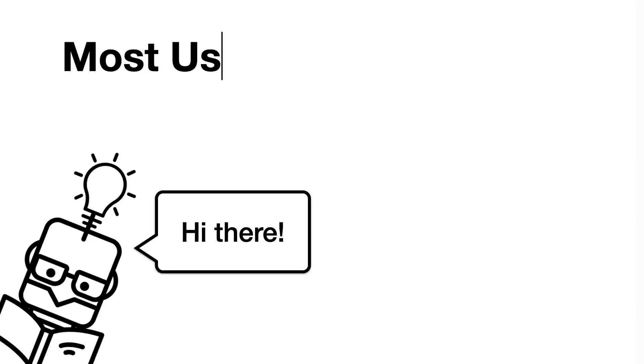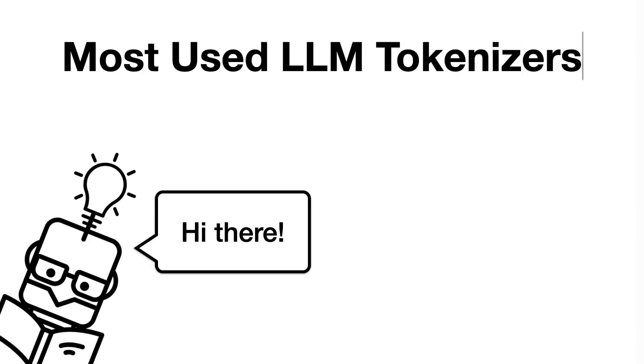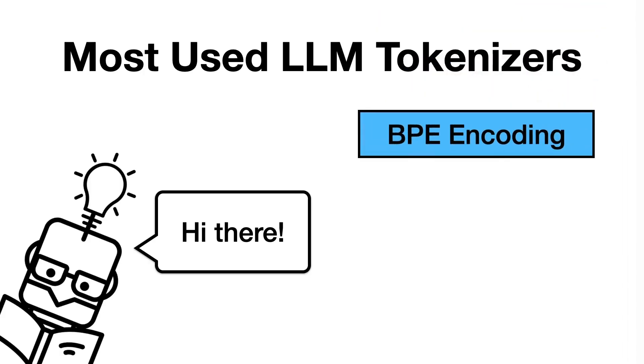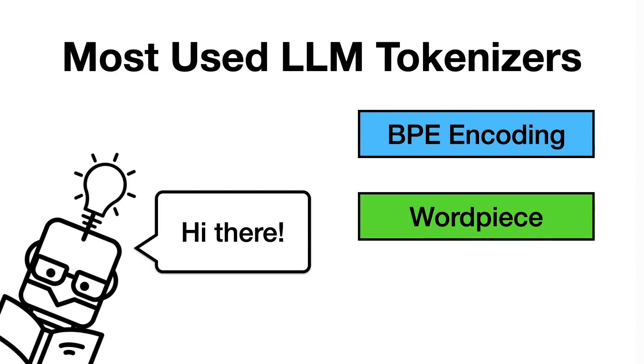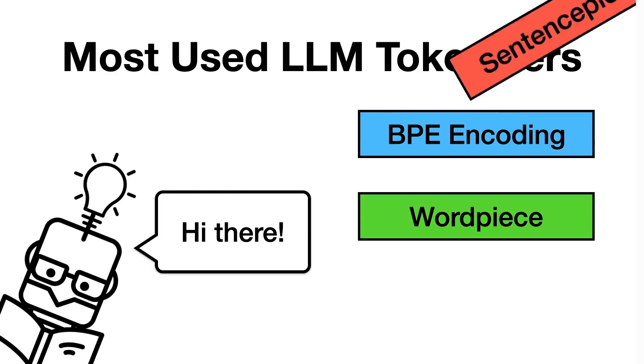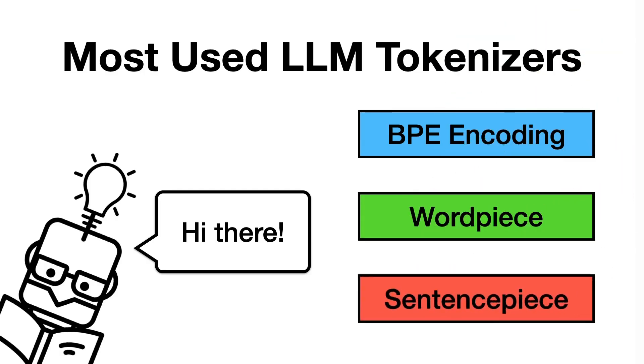Hi everyone! In this video, we are going to talk about 3 tokenizers that are commonly used when training large language models: the byte-pair encoding tokenizer, the word-piece tokenizer, and the sentence-piece tokenizer.